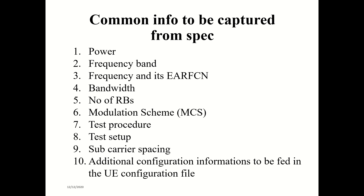Configuration information will be available in separate specs, and you must assemble all of that to implement the test. For each configuration, what should be the power, bandwidth, and all parameters — you have to refer to multiple specs. Modulation and coding scheme — MCS — values and how they are calculated are available in spec 38214 or 36214. These are the key items captured when dealing with RF; for protocol, additional different information is required.